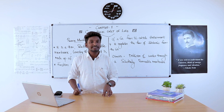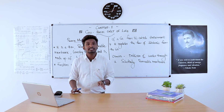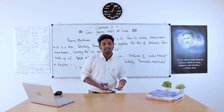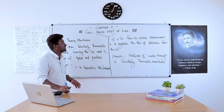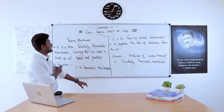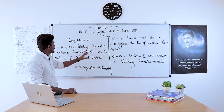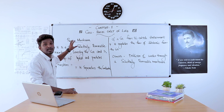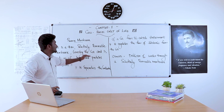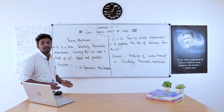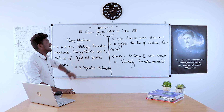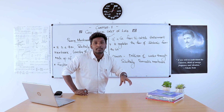Now we need to discuss the organelles present in a cell — the components of a cell. The first component is the plasma membrane. The plasma membrane is a thin, selectively permeable membrane covering the cell, made up of lipids and proteins. It is the protective covering layer of the cell.